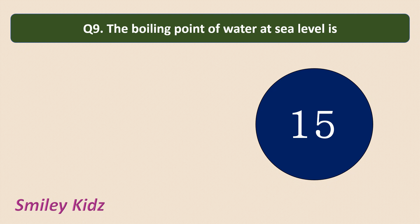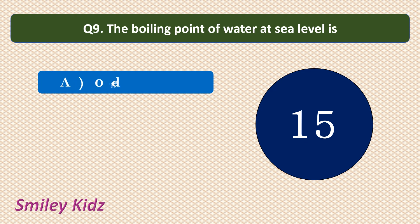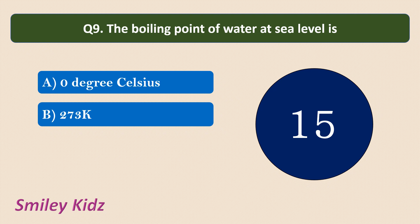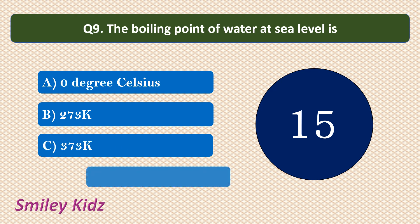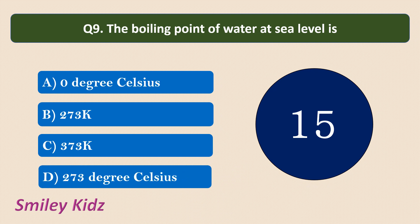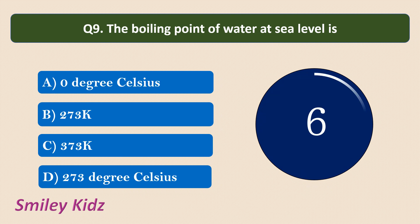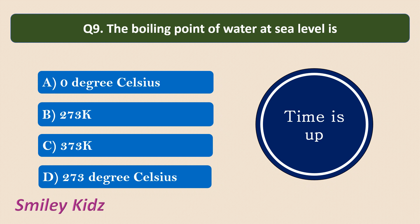Question number 9. The boiling point of water at sea level is? Options are: 0 degree Celsius, 273 Kelvin, 373 Kelvin, or 273 degree Celsius. The correct answer is 373 Kelvin. The boiling point of water is 100 degree Celsius. When we convert 100 degree Celsius to Kelvin — that is 100 plus 273 — we get 373 Kelvin.